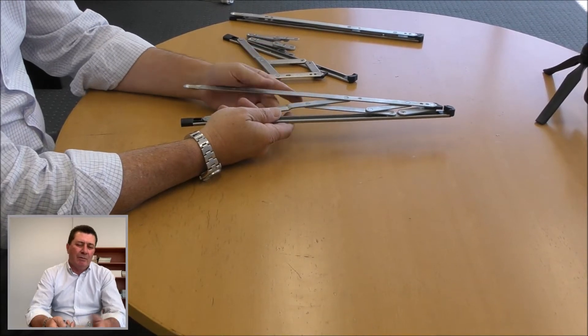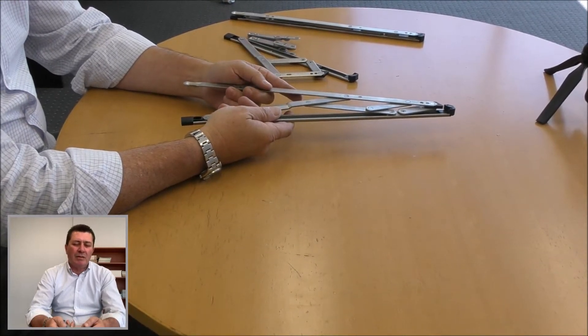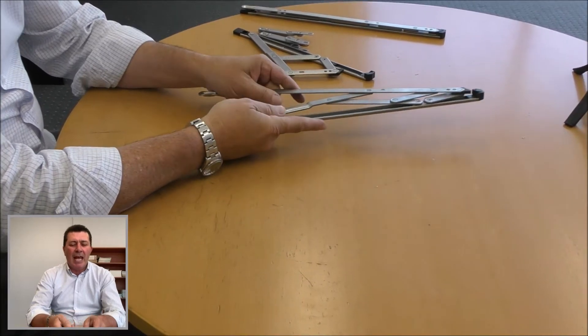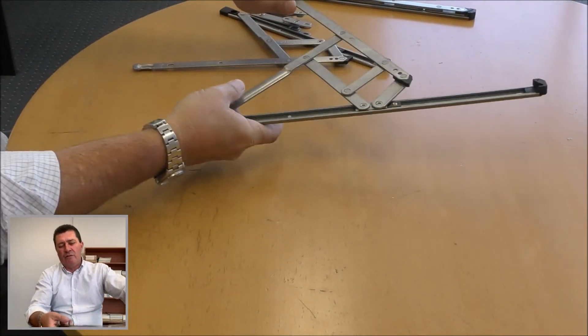Back to the problem: casement windows tend to drop when they're opened, and that happens when you're using a four bar friction stay.